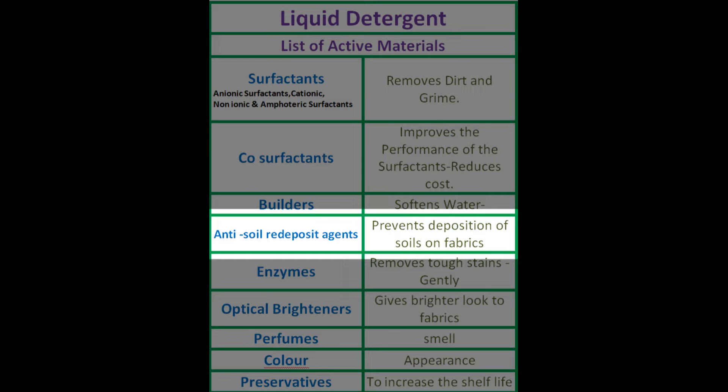Now let us understand the role of anti-soil redeposit agents. During the washing process, after the removal of dirt from clothes, the rinse water is more or less dirty — a brown colored liquid. So there is a possibility of redeposition of these soil and dirt particles over the surface of the fabrics. By adding these materials — which are generally polymers — they will form a thin coating over the soil particles and also over the structure of the fabrics, so there is no possibility for redeposition. The dirt will be washed away during the rinsing process.